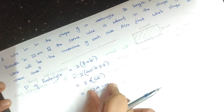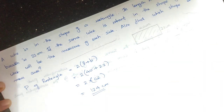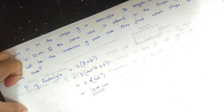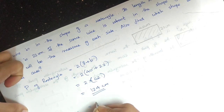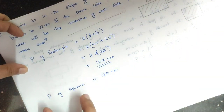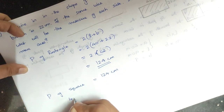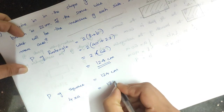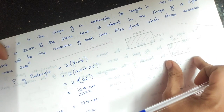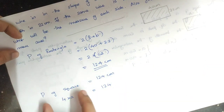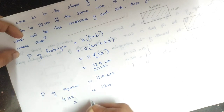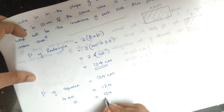Since the same wire is rebent, the perimeter of the square also equals 124 cm. Perimeter of square equals 4 into A. So 4 into A equals 124. Therefore A equals 124 divided by 4.